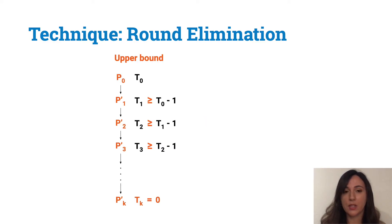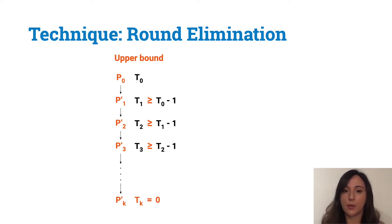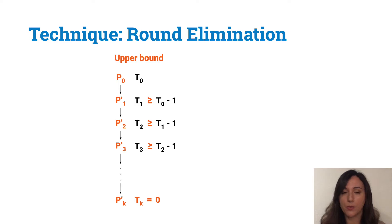Round elimination is a technique that can be used to obtain upper bounds as well. What we do is start from p0 and create a sequence of problems p1, p2, and so on, such that each problem pi is at most one round easier than the previous one. If we are able, after k steps, to reach a problem that is zero-round solvable, this directly implies an upper bound of k rounds for p0.